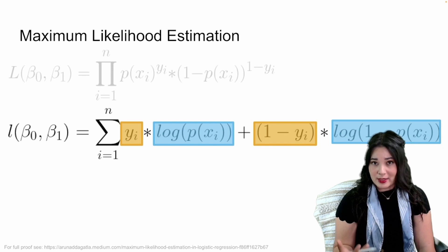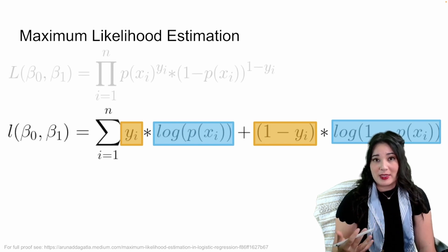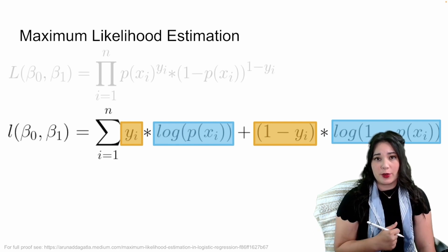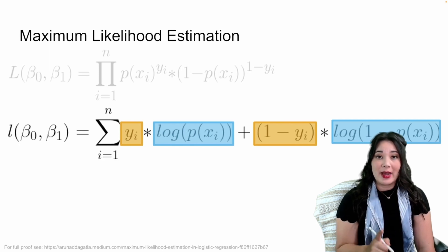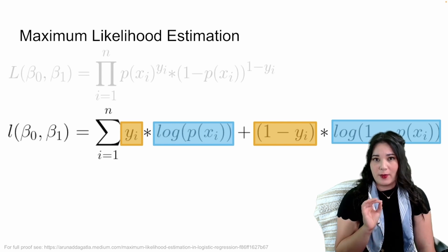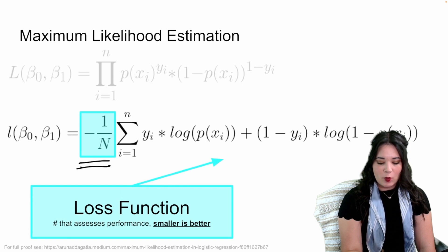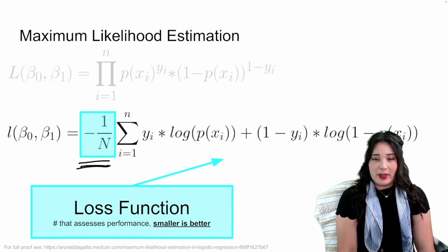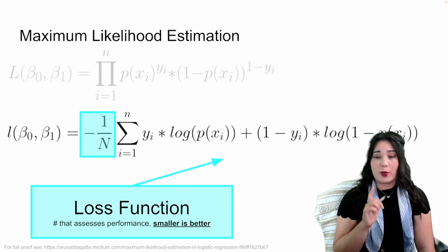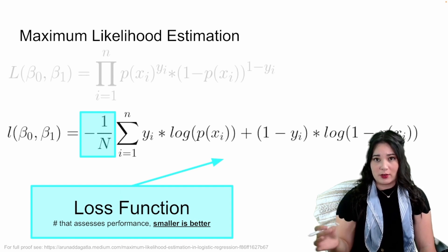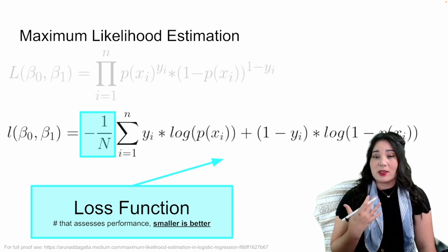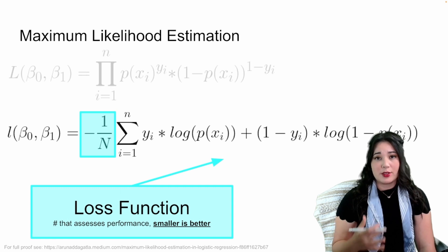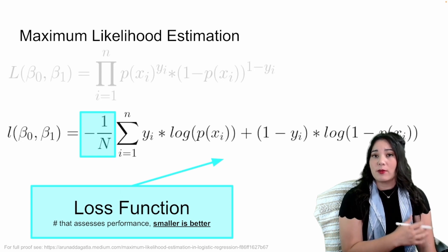It's often easier to minimize things than to maximize, so we take the log likelihood and turn it into the negative log likelihood. We add a negative one over n in front of our equation — the 1/n lets us look at the average negative log likelihood per data point. This gives us a function we want to minimize, which is an excellent loss function for logistic regression. We often refer to this as log loss.